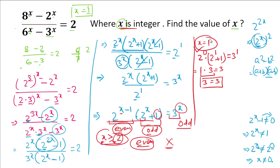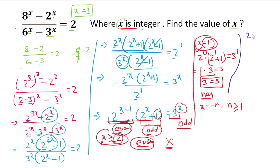Now we check negative integer values. Let x = -n where n ≥ 1. Substituting into 2^(x-1) · (2^x + 1) = 3^x gives 2^(-n-1) · (2^(-n) + 1) = 3^(-n).